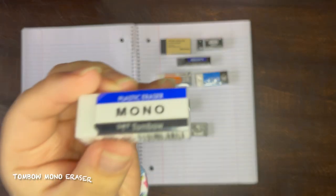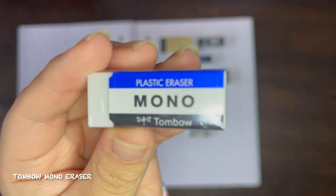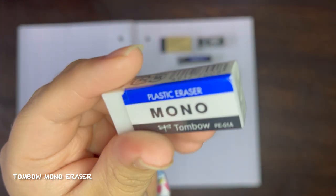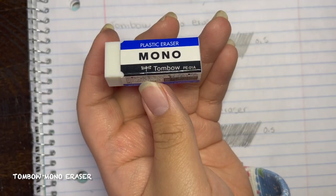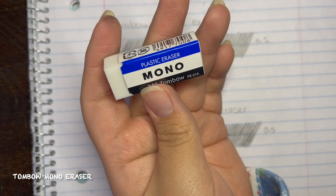Next up we have this Tombow Mono eraser in the size small. This one is really popular as well outside and within the stationery community. It is used by everyone and has been since it was introduced in 1969.